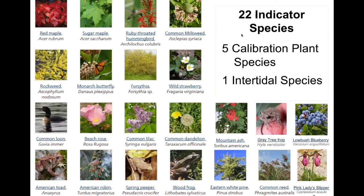We have 22 indicator species for signs of the seasons, five calibration plant species, and one intertidal species — a rockweed species called Ascophyllum nodosum. We have many plants that are found throughout Maine and are abundant in their locations. We also have animals including birds, amphibians, and butterflies.